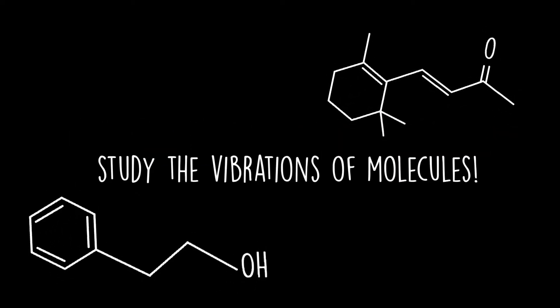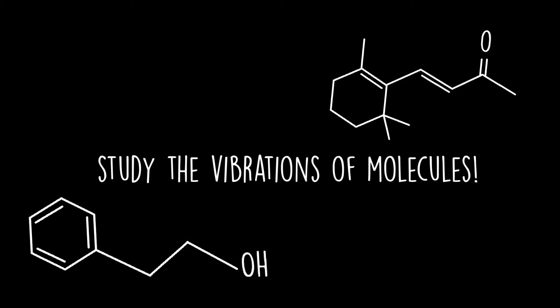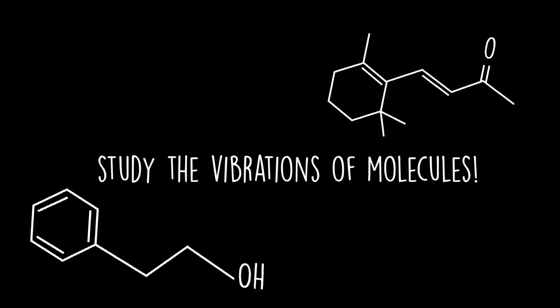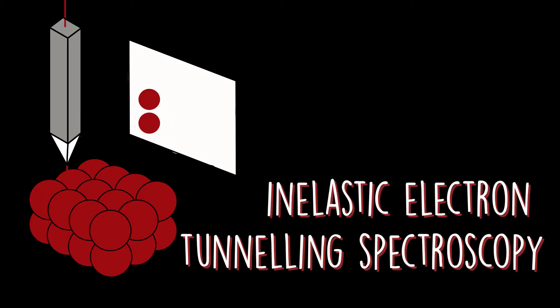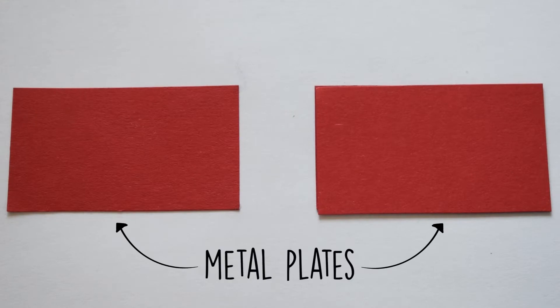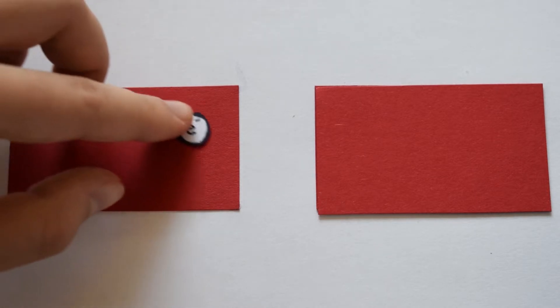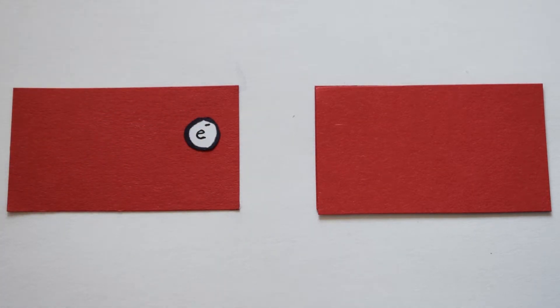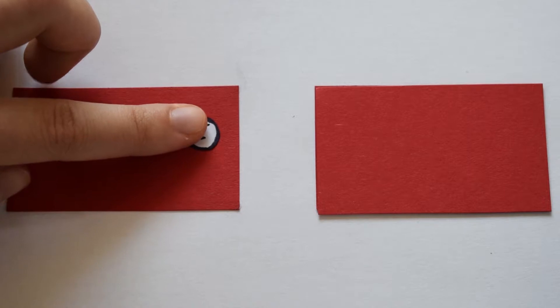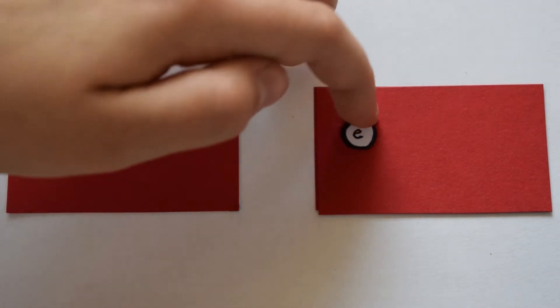There is a way electron tunnelling can be used to study the vibrations of molecules — more exactly, their resonant frequencies. This tool is called inelastic electron tunnelling spectroscopy. To understand how this works, imagine two metal plates separated by a barrier. By applying a bias voltage between the contacts, and having a thin enough barrier, there is a finite probability that the incident electron tunnels to the other side.